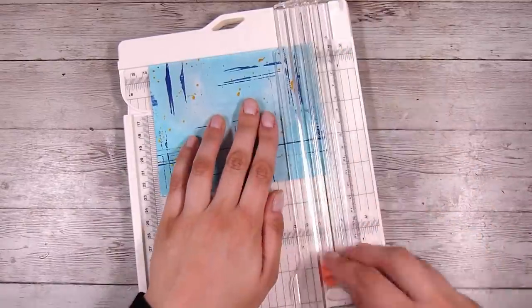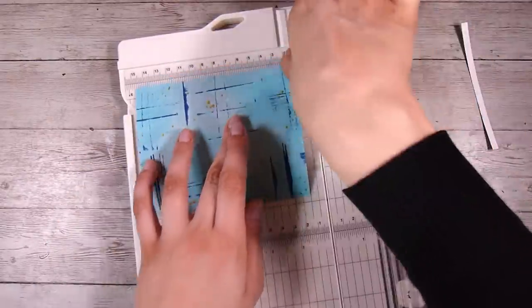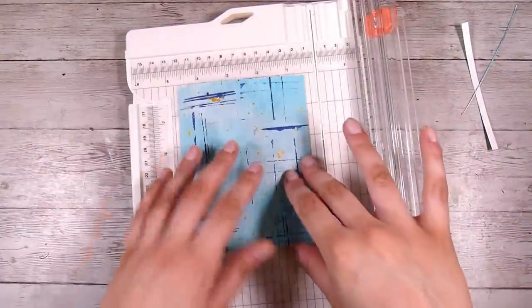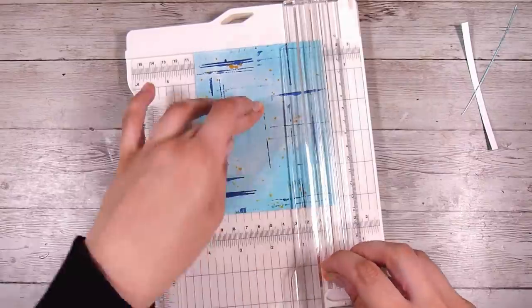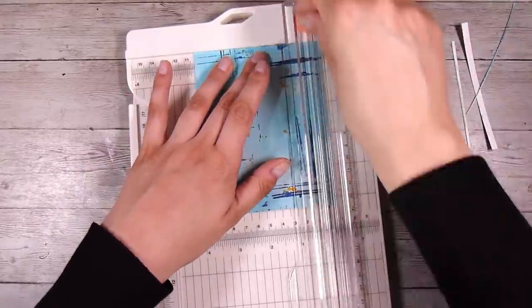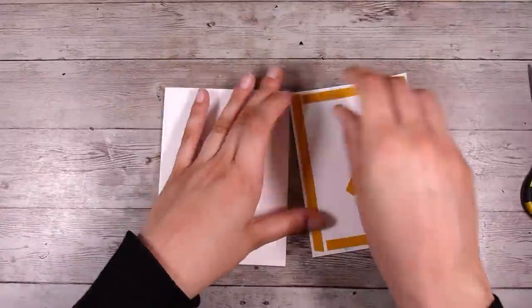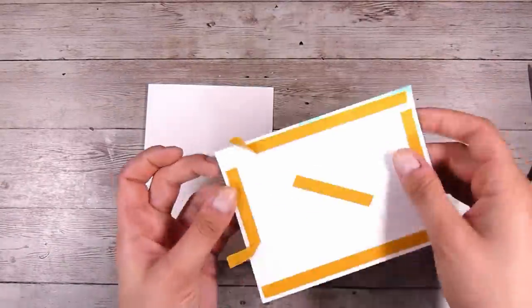And this is going to contrast beautifully with my blue background that we have created. Now this is all nice and dry, I'm going to trim this down so that this can go onto a card base. All the cards that I pretty much make unless they're kind of specialty cards are four and a quarter by five and a half inches. And I'm going to trim down all the bits that I kind of would prefer to be off there.